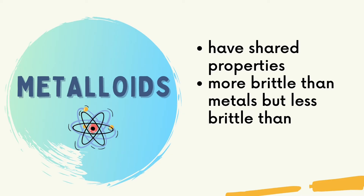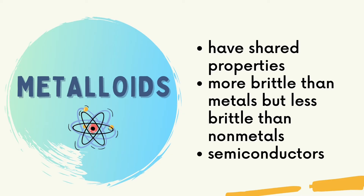Lastly, we have metalloids. Metalloids have shared properties between metals and non-metals. These are elements with the same chemical properties of non-metals, but they exhibit physical properties of metals. They are more brittle than metals, but less brittle than non-metals. Metalloids are also semiconductors — materials which have a conductivity between metals and non-metals.